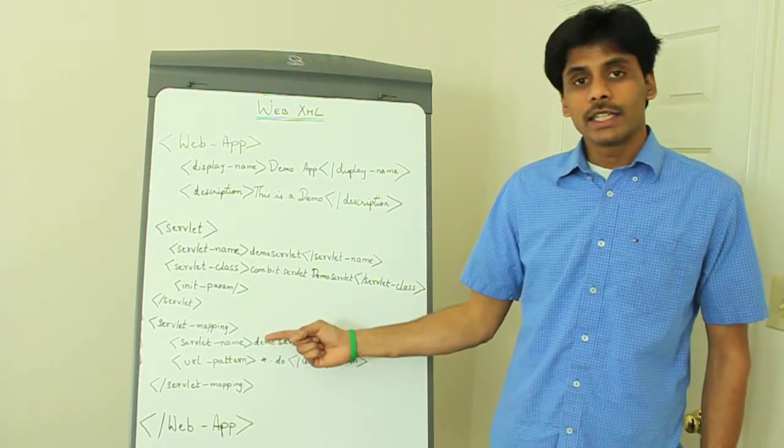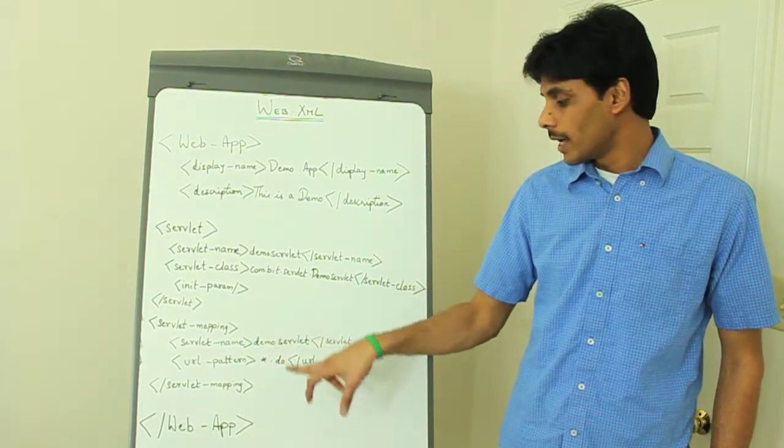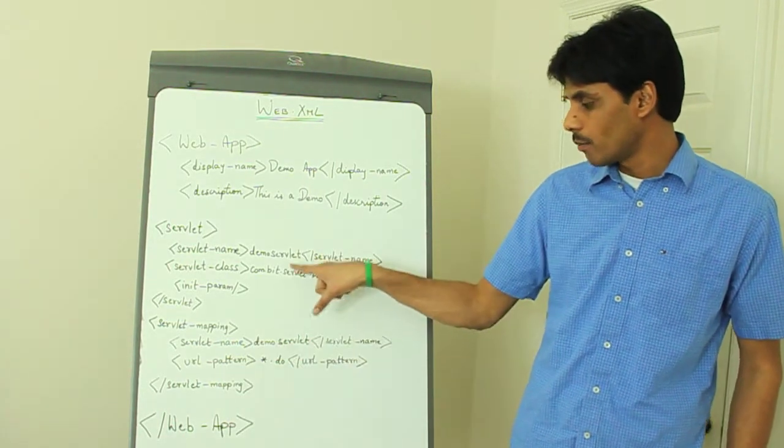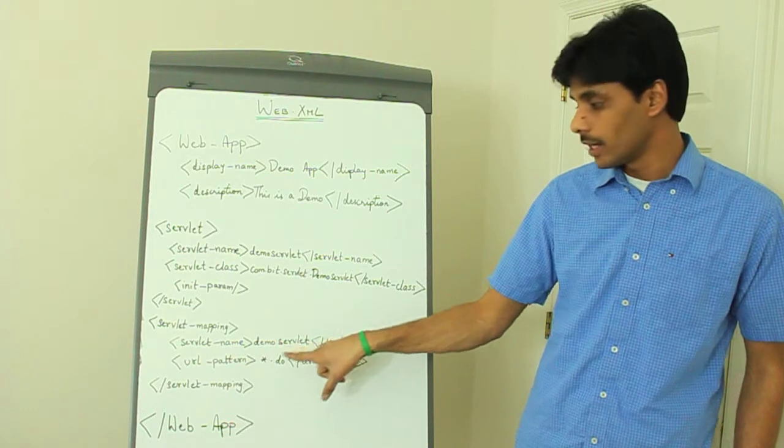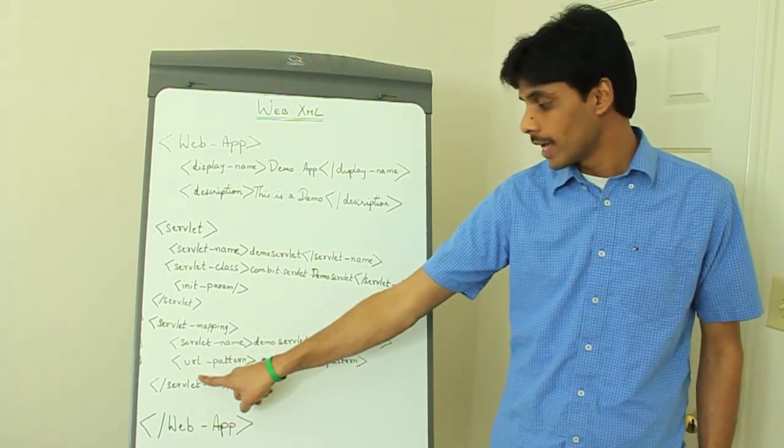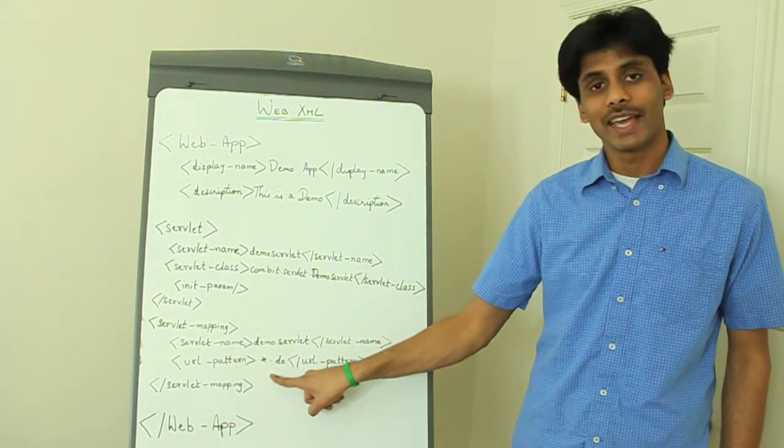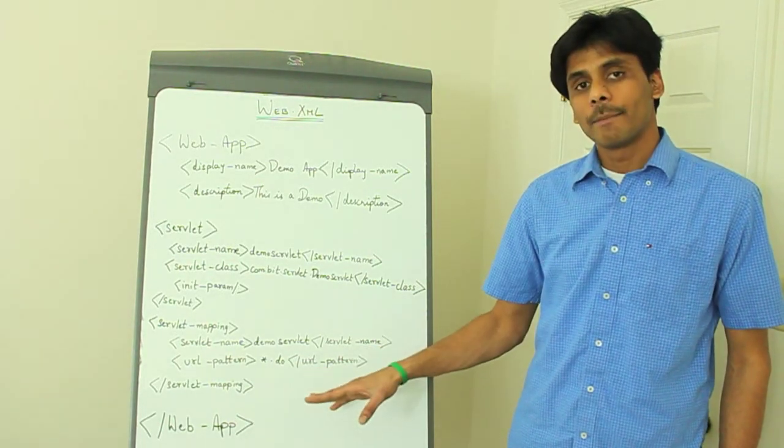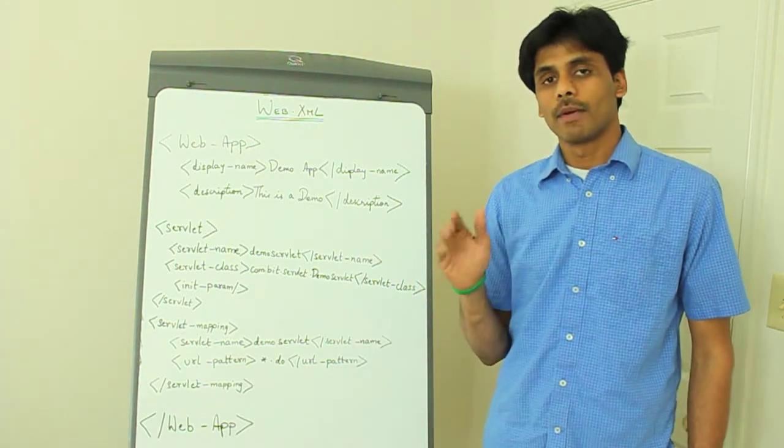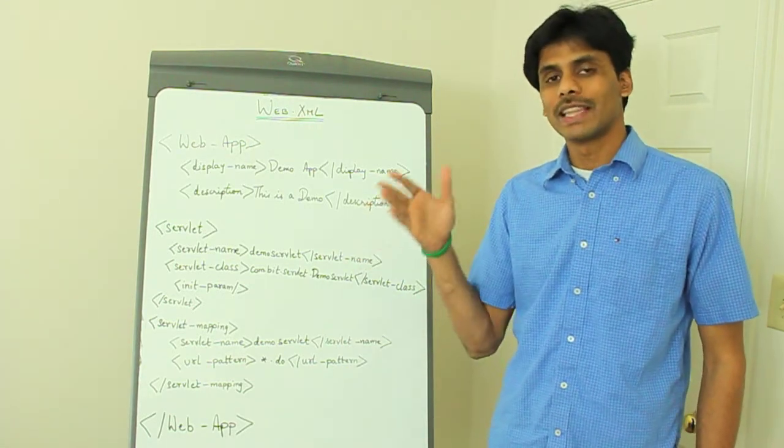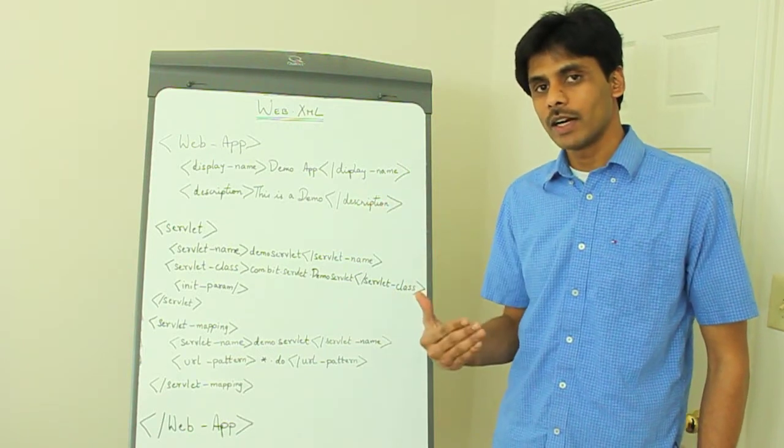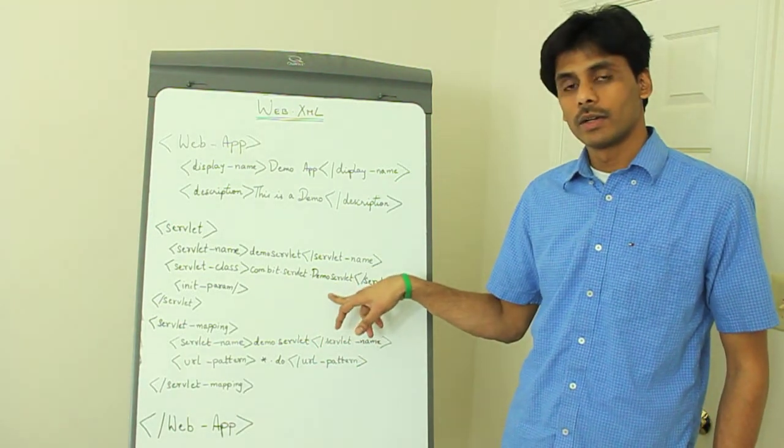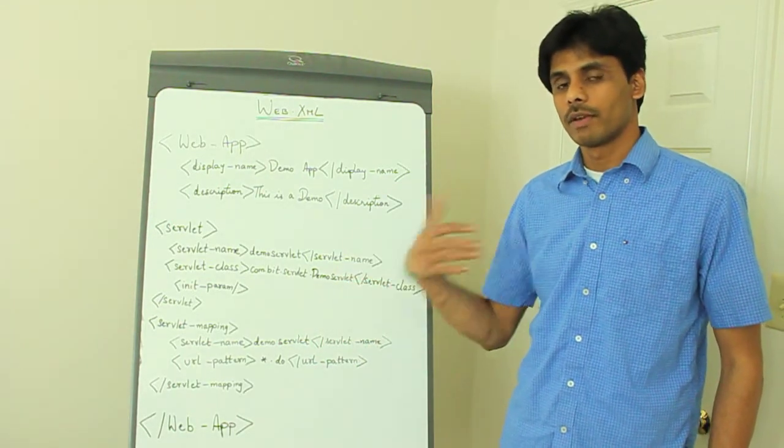Taking it a step further, using the servlet mapping, you can do a URL pattern match to your servlet class. So you use the name whatever you gave here, the demo servlet within the servlet name tag and then you define a URL pattern which in my case is star.do. What this means is every time there is a resource by name anyanyname.do within the URL or the URL that comes into the web container, the web container automatically runs the demo servlet and whatever response comes out of it will be sent to the browser.